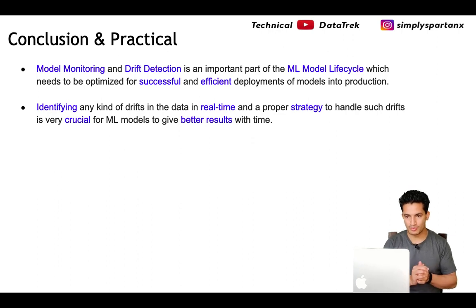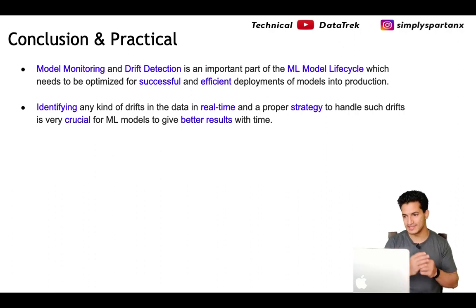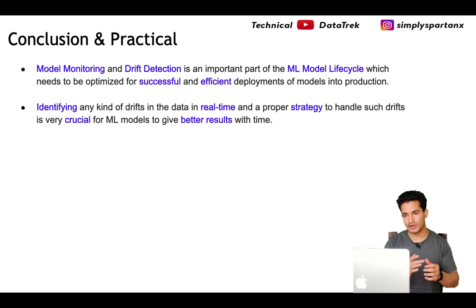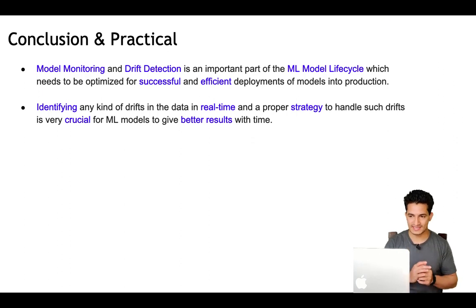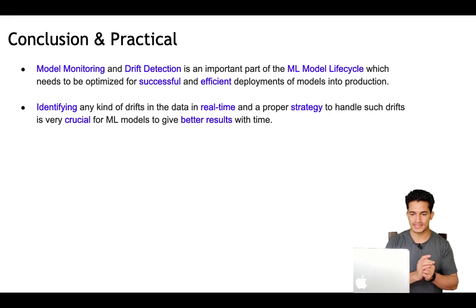In conclusion, model monitoring and data drift detection are an important part of the ML model lifecycle and need to be optimized for successful and efficient deployments in production. We need a proper strategy to handle such drifts, and it is very crucial for ML models to give better results over time. We have now looked at the complete theory and different methods to detect data drift — let's quickly do a practical exercise.